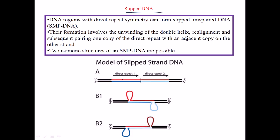Let us look at the structure and the picture here. We have a strand from 5 prime to 3 prime and the complementary 3 prime to 5 prime — the normal double-stranded picture. We have direct repeat regions 1 and direct repeat 2, along with their complementary counterparts.